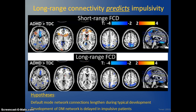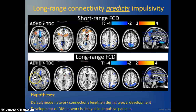Long-range connectivity correlates with impulsivity. A study by Tomasi found that the default mode network connections lengthen during typical development, and that local connections give range to long-range connections with experience and age. In people who are impulsive, development of the default mode network is delayed. Impulsive juvenile delinquents and those with ADHD show more short-range connections and fewer long-range connections versus typically developing children and adolescents.